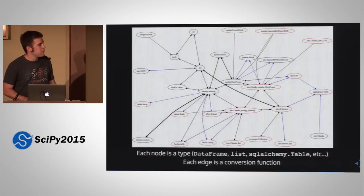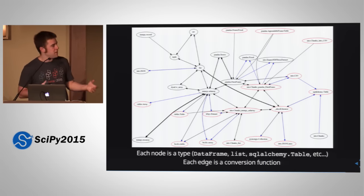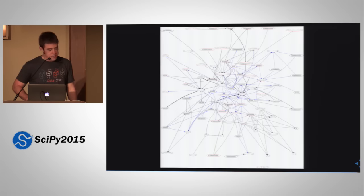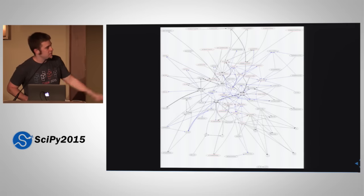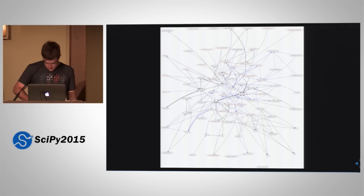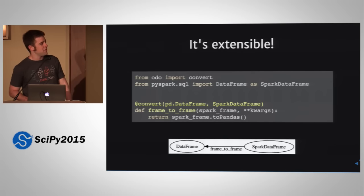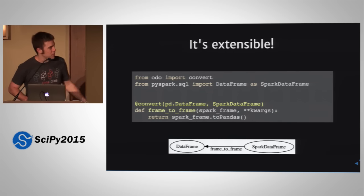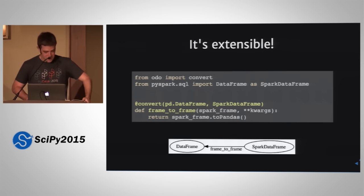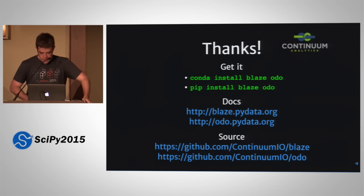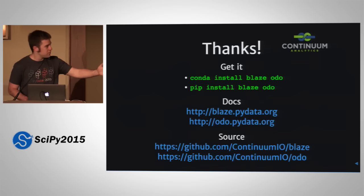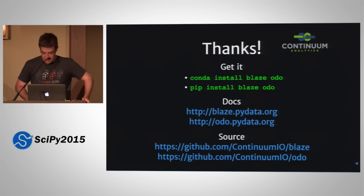There's a network of conversions. This is the subgraph of data frame to all other stuff — all the direct links between data frame and other types. And this is the whole graph; it's kind of big, probably bigger now as this slide is a couple of months old. You can make your own converters — you don't have to contact the Odo library developers. You use decorators and give it the types, and that function does the conversion. There's the docs and the source, and I'm happy to take questions about either Blaze or Odo.